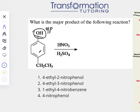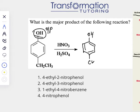So the only position that is left is ortho. It could be to the left or to the right — it really doesn't matter because it will be the same product. So I'm going to draw my benzene ring with my OH group and my CH2CH3 group, and my NO2 is going to go in the ortho position, which is next to the OH. So this must be the product of this reaction.